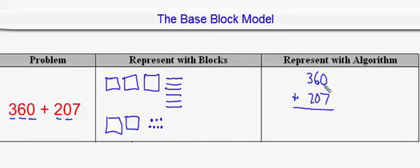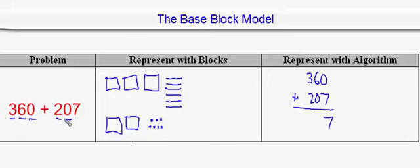We typically start with the ones place, and we had 7 units here and 0 units here. So taking 7 and adding 0 — since adding 0 doesn't change anything — you're left with 7 units. Then we had 6 rods, and we add that to the 0 rods. Well, adding 0 doesn't change anything, so you'd have 6 in the tens place.